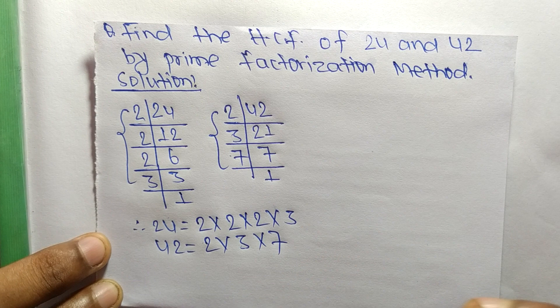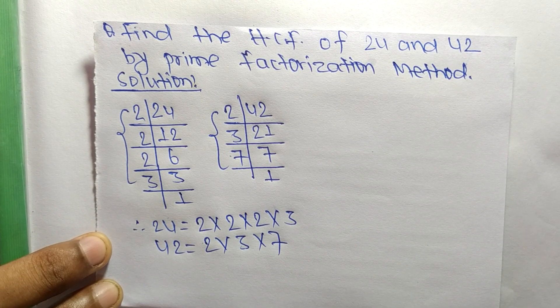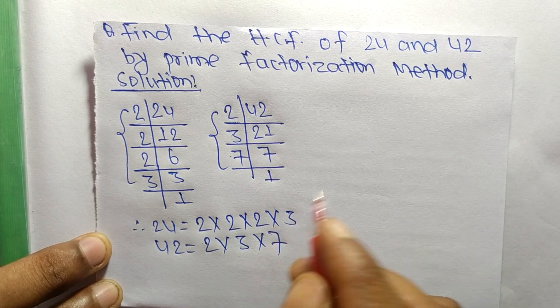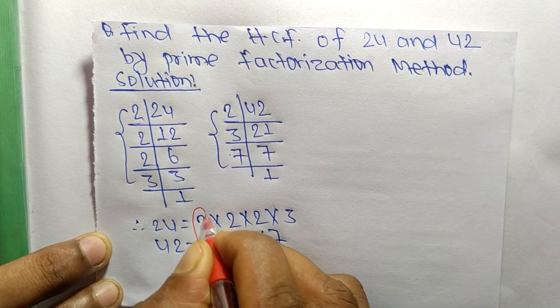So now we find out the common factors in this prime factorization. The first common factor here is 2 and second one is 3.